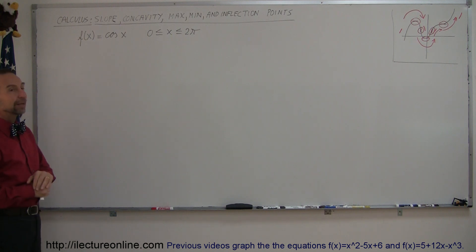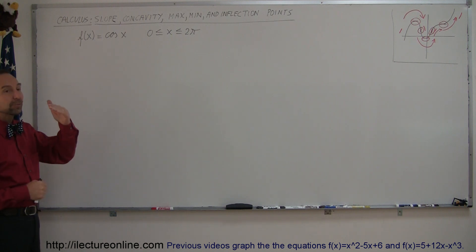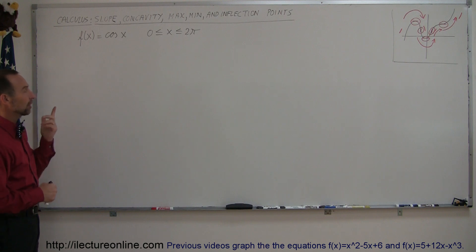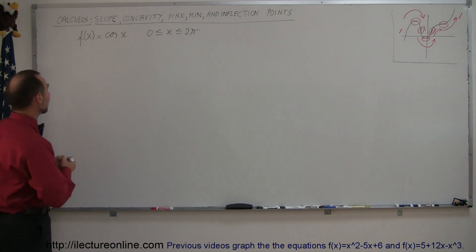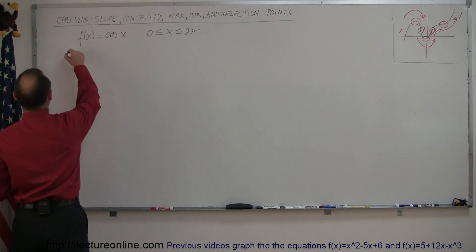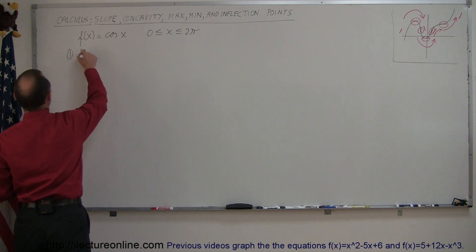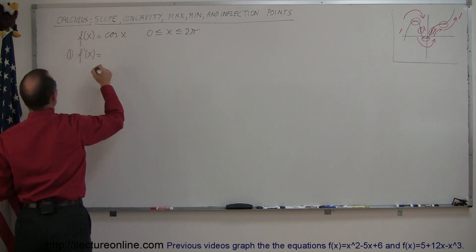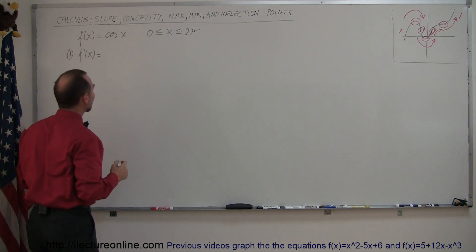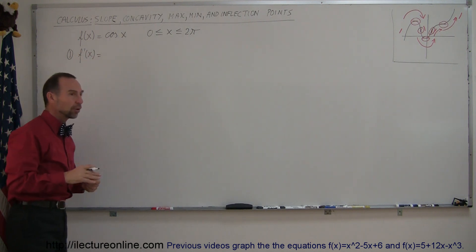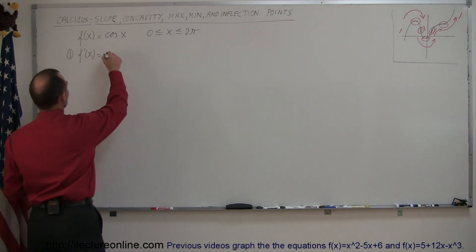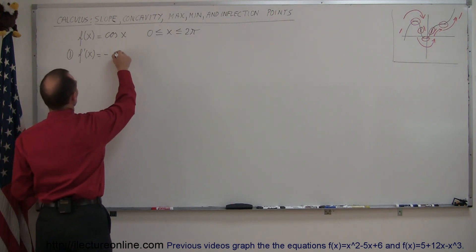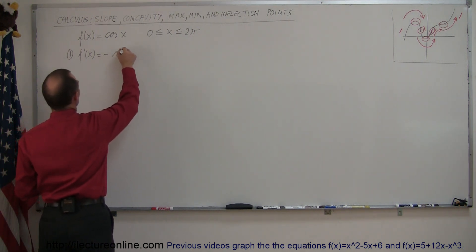How do we do that? Well, we have a very specific technique that we follow. The first thing we always do is find the derivative. So step one: find f prime of x. Since the derivative of the sine is the cosine, the derivative of the cosine is therefore the negative sine. So f prime of x is the negative sine of x.